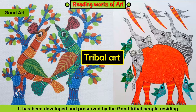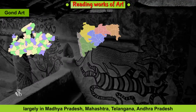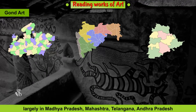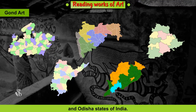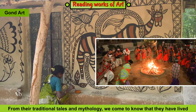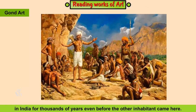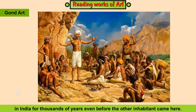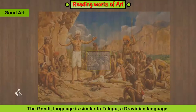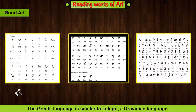It has been developed and preserved by the Gond tribal people residing largely in Madhya Pradesh, Maharashtra, Telangana, Andhra Pradesh and Odisha states of India. From their traditional tales and mythology, we come to know that they have lived in India for thousands of years, even before the other inhabitants came here. The Gondi language is similar to Telugu, a Dravidian language.